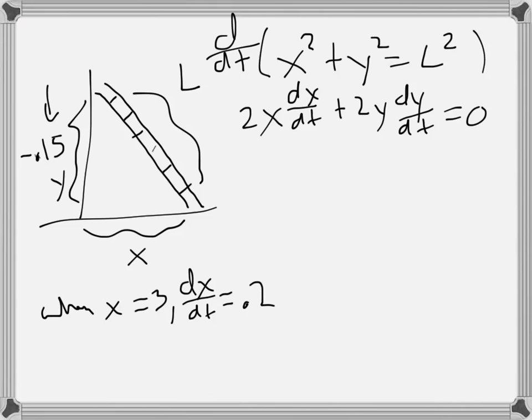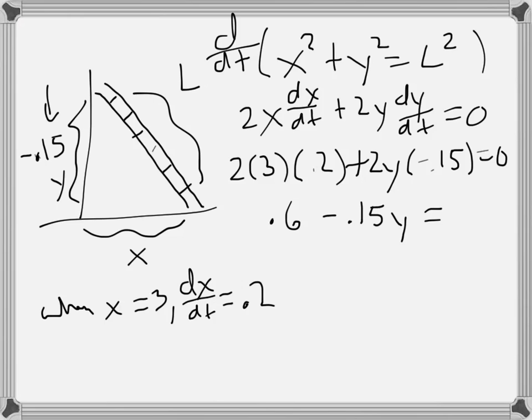So they say that when x is 3, dx/dt is 0.2. I don't know y, but dy/dt is minus 0.15, and this all equals 0. So I can divide everything by 2, and then I get 0.6 minus 0.15y equals 0. So then y is minus 0.6 divided by minus 0.15, and that's 4.